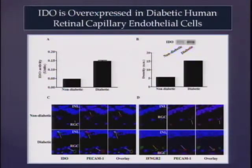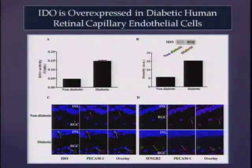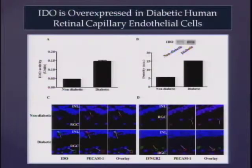Then he did immunocytochemistry. Scott helped stain the retina for the endothelial cell marker PCAM-1 (CD31), and you can see endothelial cells light up with this antibody. IDO staining overlaps with PCAM-1 immunostaining, suggesting that enzyme activity is primarily present in endothelial cells of the capillaries. He also stained for interferon gamma receptor 2, which also co-localizes with PCAM-1 — suggesting both IDO and interferon gamma receptor 2 are present in capillary endothelial cells of the human retina.